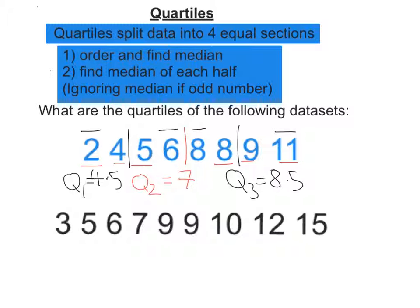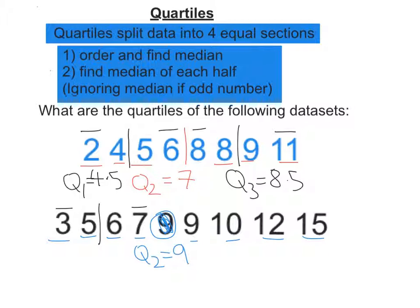Okay, let's go on to the next example. So again, let's pair them off until we're left with 1 or 2 in the middle. This one we're left with 1 in the middle. So our median, or Q2, is 9. Now let's find the median of each half, and as it says at the top, ignore the median if there's an odd number. So the bottom half is 3, 5, 6, 7. So Q1, the lower quartile, is 5.5. And the upper quartile is going to be 11.